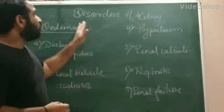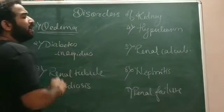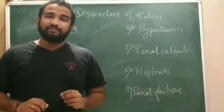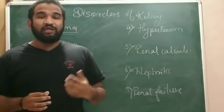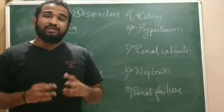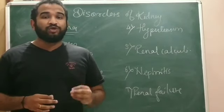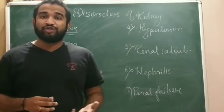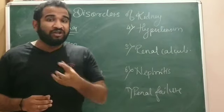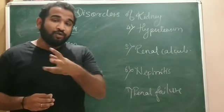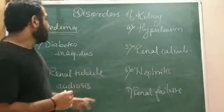In this video we will study about the disorders of the kidney. The first disorder is edema. When more and more fluid is present in any tissue more than required, that tissue starts swelling — this swelling is called edema. Edema is caused because of the high concentration of sodium ions in that tissue, and when sodium ion concentration increases, water retention also increases, causing edema.